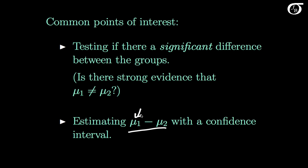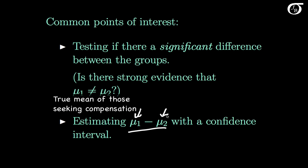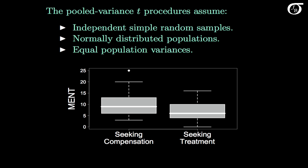I'm going to call group 1 the group seeking compensation and group 2 the group seeking treatment, but we could switch those around and our conclusions wouldn't change. Here are the box plots with the assumptions of the pooled variance t procedures. First, we need independent simple random samples. We do have independent samples — a group of 49 individuals seeking compensation and a separate group of 70 individuals seeking treatment. However, they were not simple random samples; they were individuals showing up at a clinic and volunteering, so we'll have to be a little cautious with our conclusions.